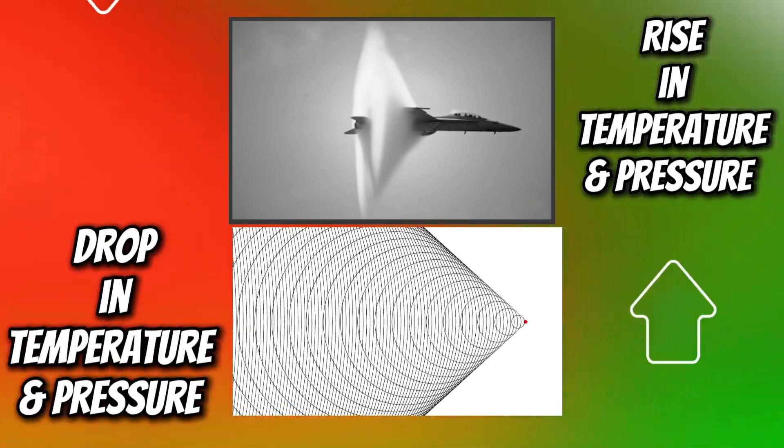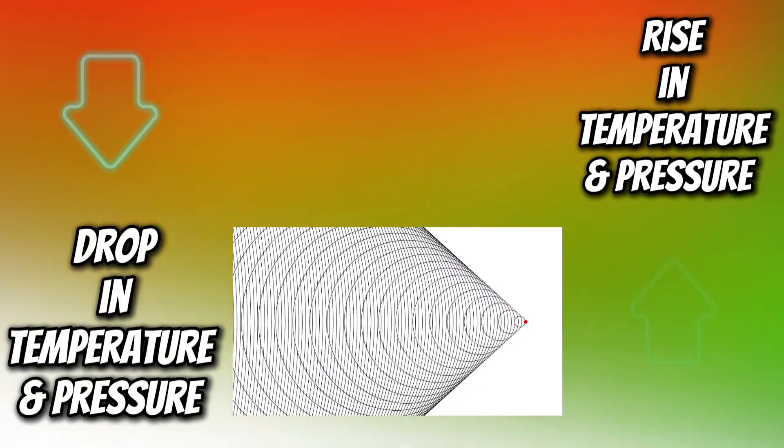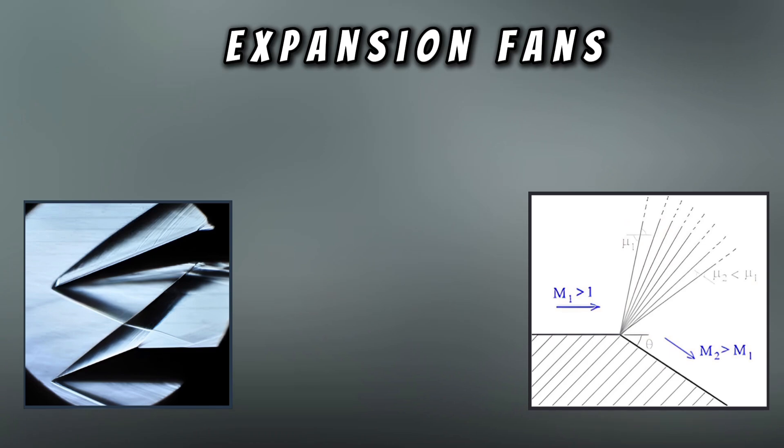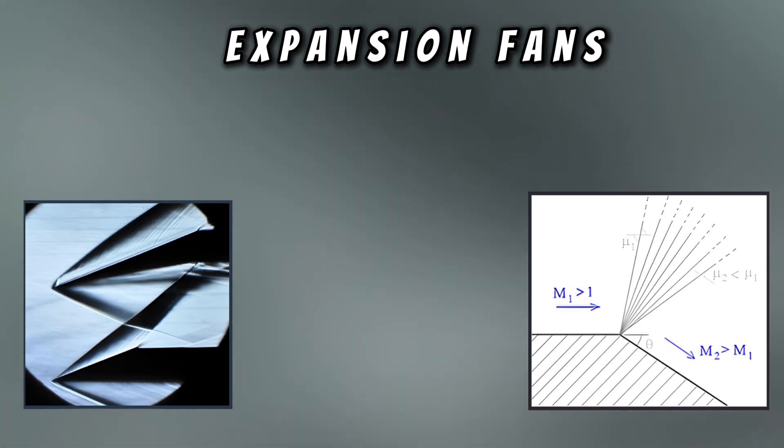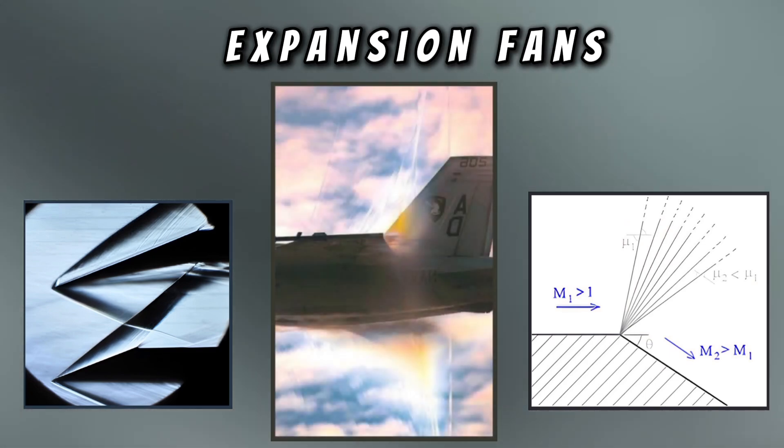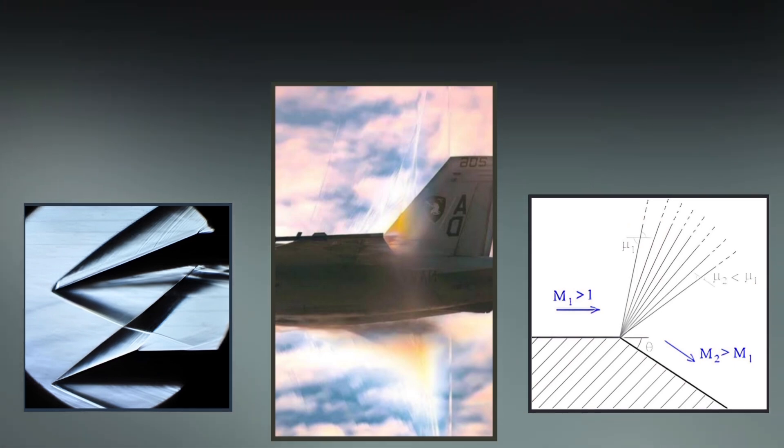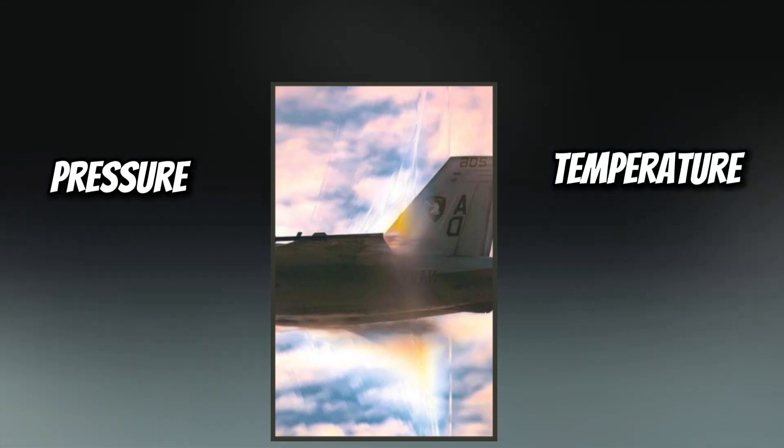In addition to shock waves, expansion fans occur when air flows around curved surfaces of the aircraft, such as the wings and the fuselage. These expansion fans lead to a drop in pressure and temperature.